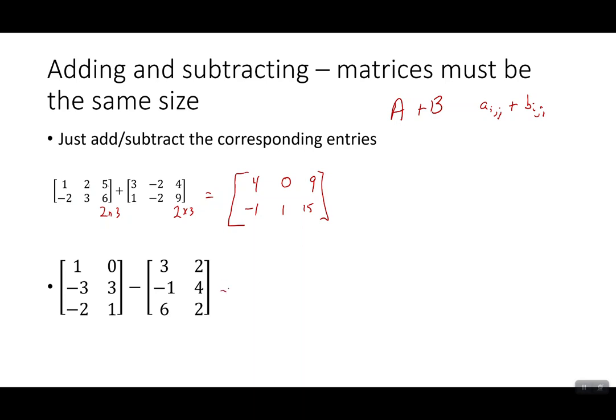And with subtraction, you do the same thing. Here I've got three rows, two columns, and three rows, two columns. And I'm going to add them together. Just do term by term, column by column, entry by entry.